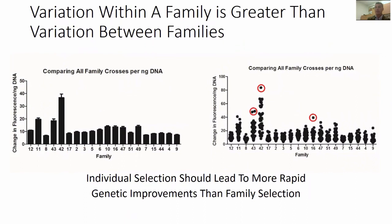People are currently selecting oysters based on family crosses, but our data suggests this may not be the most efficient approach. If we can identify individuals within a family that have a high metabolic rate — those are the oysters that won't perform well. Even within a low metabolic rate family like Family 9, if you chose that family's brood stock without selecting the individual with the lowest metabolic rate, you wouldn't get the maximal benefit. We think individual selection will lead to more rapid genetic improvements than family selection.